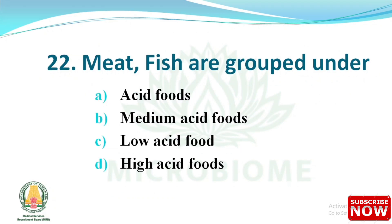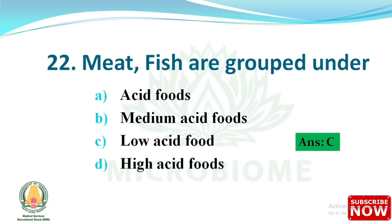Next question: meat and fish are grouped under which category? Options are: acid food, medium acid food, low acid food, high acid food. The right answer is option C: low acid food.